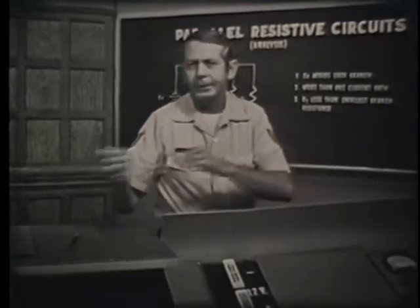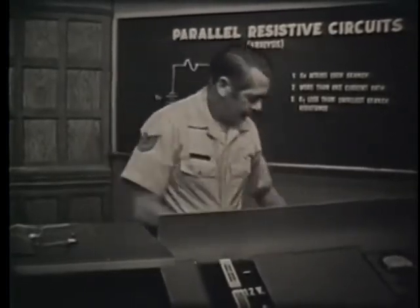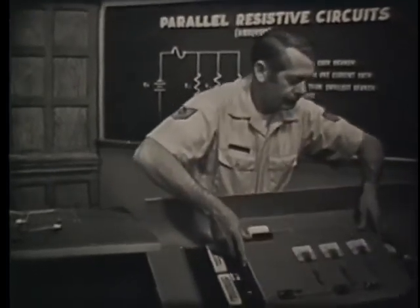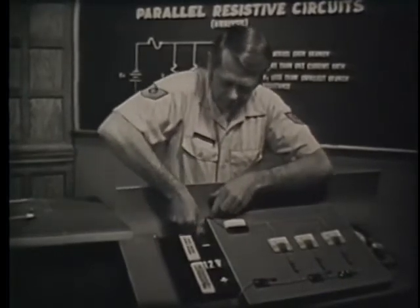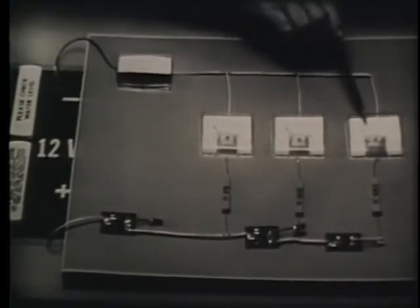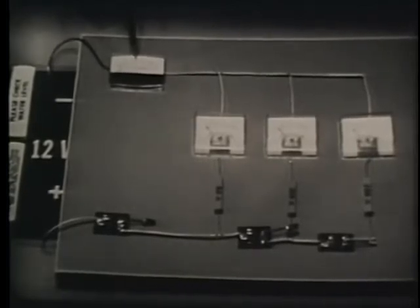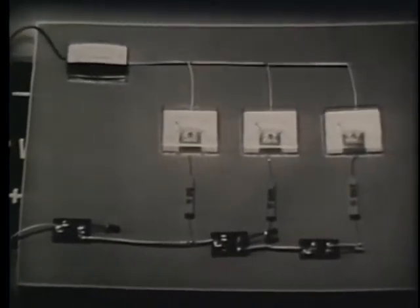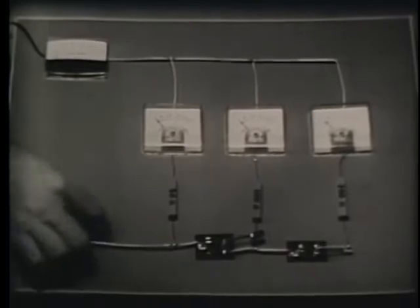Next, let's investigate the current distribution in a parallel circuit using another trainer. Notice that we have four milliamp meters in the circuit. The current leaving the negative terminal of the battery — all of the current must pass through this meter, so we'll use it to measure the total circuit current. The other meters will measure the current in the individual branches. Let's start by closing this switch, which completes a path for current through this first branch.